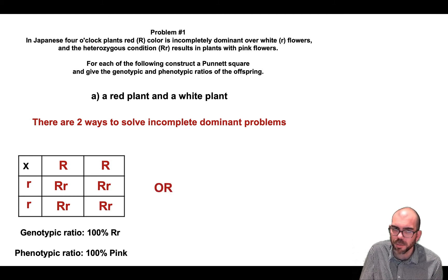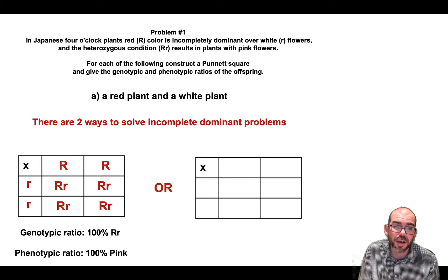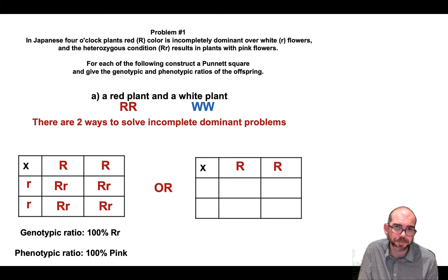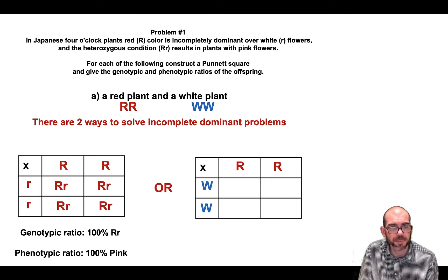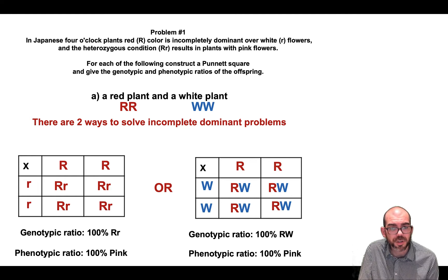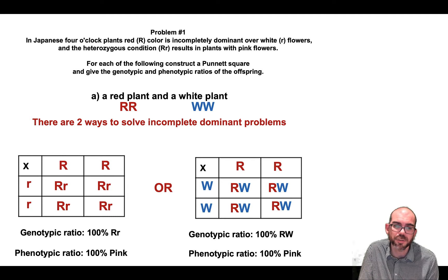A slightly more accurate way to represent this would be to give each color its own letter. I'm still going to represent the red plant with R's, but I'm going to use W's to represent the white. So my red plant is big R, big R, and my white plant is big W, big W. When I do the cross, I have 100% big R, big W. So my genotypic ratio is 100% RW, and my phenotypic ratio is 100% pink. When solving these problems, either of these notation rules are fine — you just want to remain consistent.